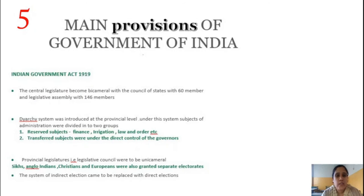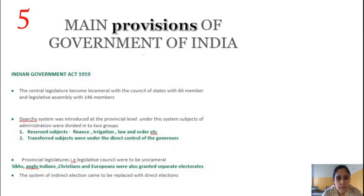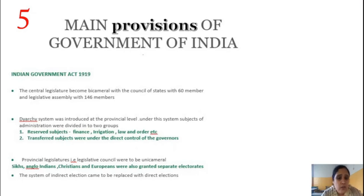The main provisions of the Government of India Act 1919: the first was that the central legislature should become bicameral — consisting of two houses: the Council of States with 60 members and the Legislative Assembly with 160 members.